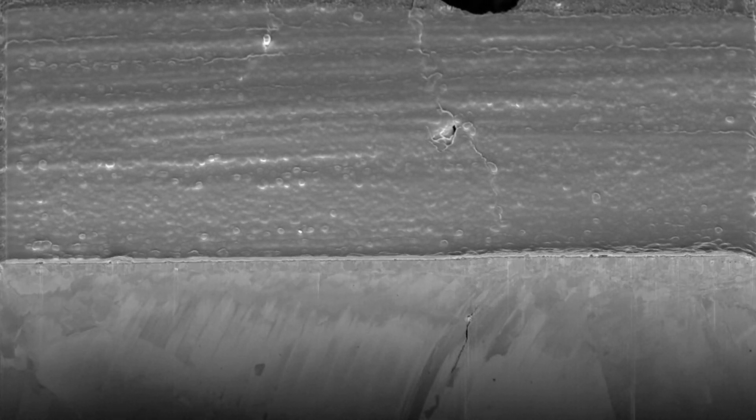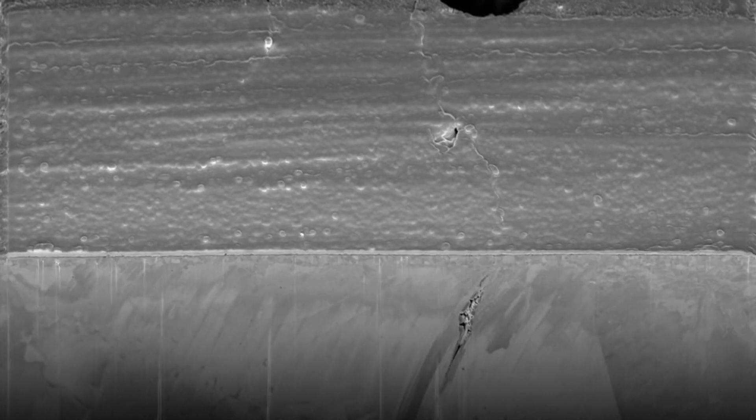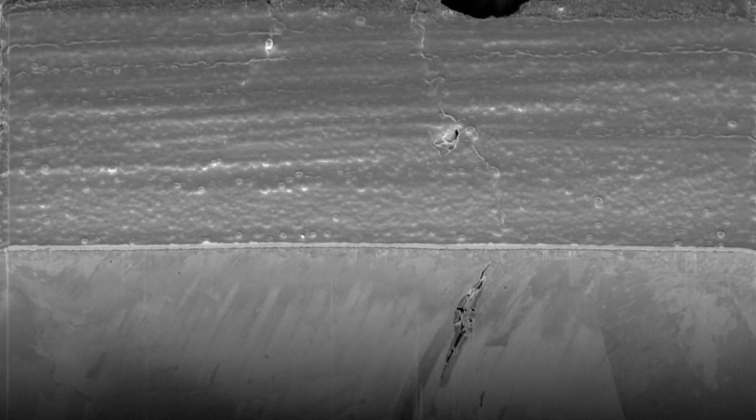In this procedure a beam of high energy gallium ions is used to blast away very thin 50 nm slices of material while electron microscope images are captured between each slice.